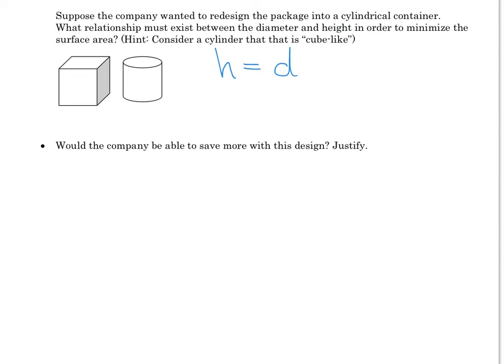In other words, the height of the cylinder would equal the diameter of the cylinder. Those two dimensions would be the same. And another way of saying that is that the height is actually equal to two times the radius. This is our important relationship that we're going to use to minimize the surface area even more using the same volume of this container.